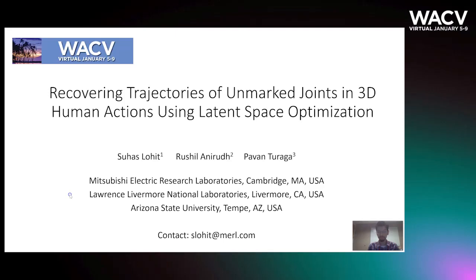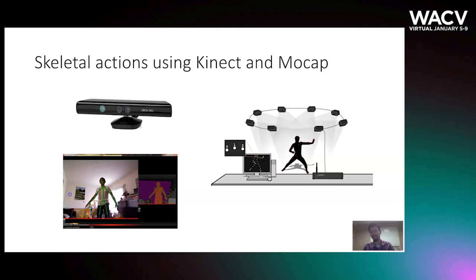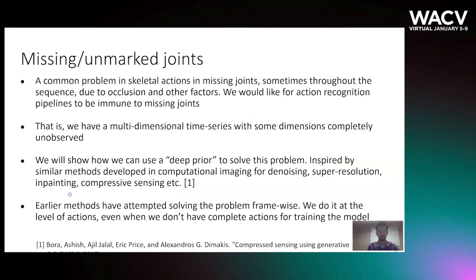In this paper we focus on human action sequences captured in the form of skeletons using devices like the Kinect and motion capture, also called MOCA. A common problem in this modality is that not all joints in the skeleton will be visible. This can happen due to several reasons, including occlusions — that is, we have a multi-dimensional time series with some dimensions which are completely missing throughout the time series.